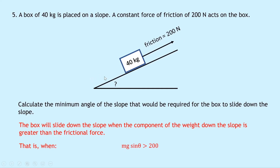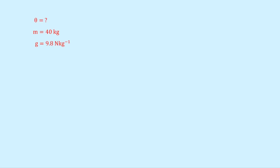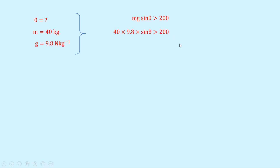Writing down what we know: mass is 40 kg, g is 9.8 N/kg. Substituting: 40 × 9.8 × sin(theta) > 200. Dividing both sides by 40 × 9.8 gives sin(theta) > 0.51. Taking the inverse sine: theta > 30.7 degrees. So when the angle is greater than 30.7 degrees the box will start sliding, meaning the minimum angle required is 30.7 degrees.